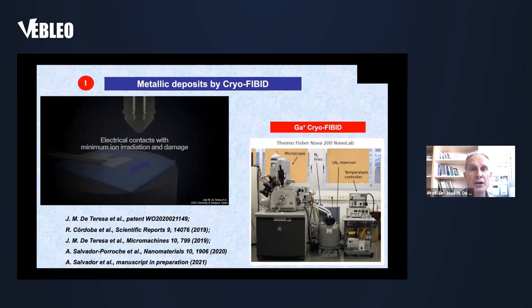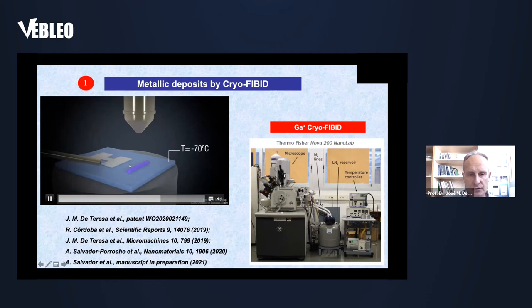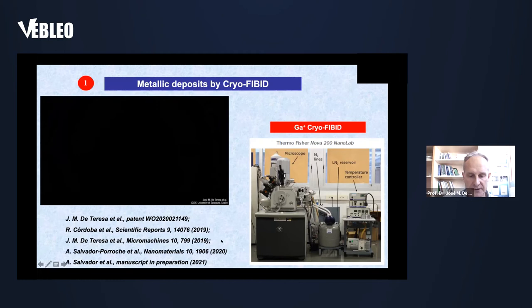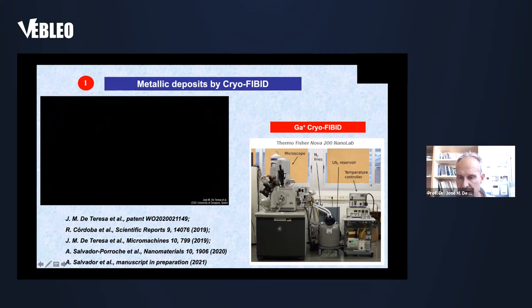I can use this fast process to create electrical contacts to nanostructures. For example, to grow contacts to a nanowire, I first condense the precursor layer, irradiate with the focused ion beam, then heat the substrate back to room temperature. The non-irradiated part evaporates and only the contacts remain, allowing study of the electrical properties of these structures. Our equipment is a gallium focused ion beam from Thermo Fisher with a cryomodule using liquid nitrogen to flow cold nitrogen gas and cool down the substrate.